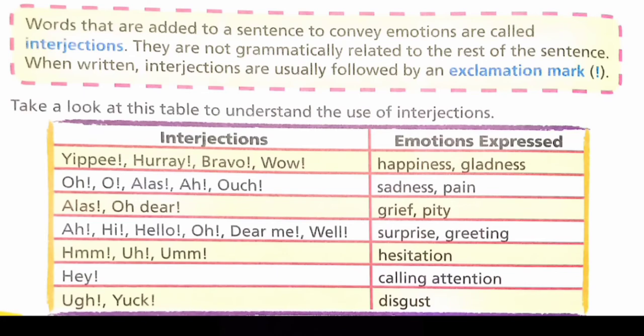Interjections are not normally used in formal writing, but they are common in speech and therefore in informal and fiction writing, where they show emotions such as anger, surprise, and interest, as well as convey hesitation. Interjections are frequently followed by an exclamation mark, which itself is used to express emotion. Take a look at the table to understand the use of interjections on page number 144.